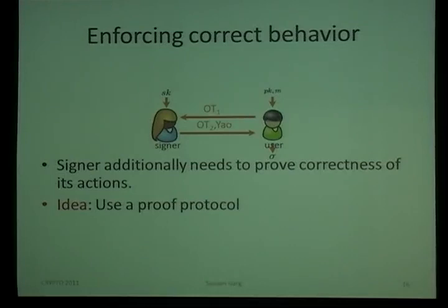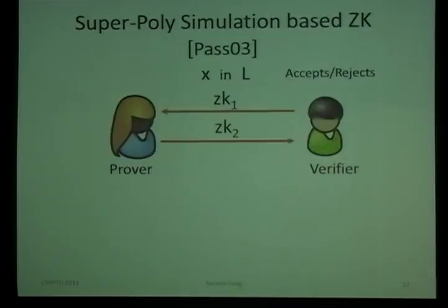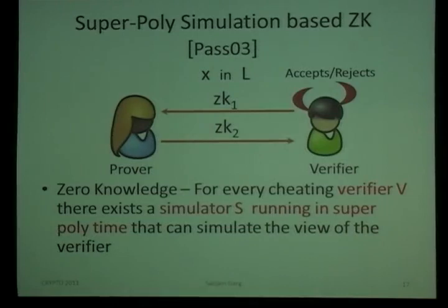The idea is to use a proof protocol. The immediate question is which proof protocol to use, because standard zero-knowledge protocols require three rounds, and we are constrained to just two rounds. Fortunately, we know of a weakened notion of zero-knowledge called super-polynomial simulation-based zero-knowledge, where a prover can prove to a verifier that some statement is true in just two rounds. The weakness is that for every cheating verifier, there exists a simulator S that runs in super-polynomial time and can simulate the view of the verifier.